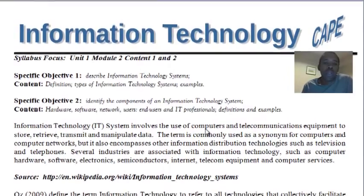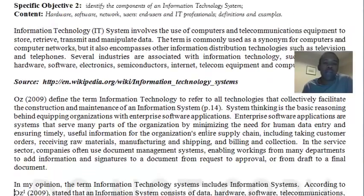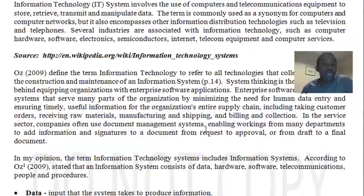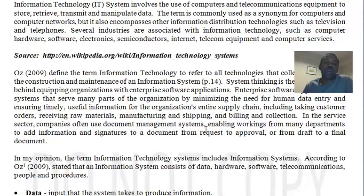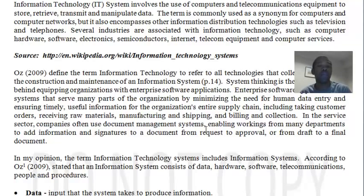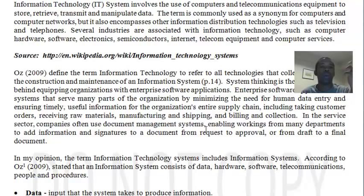Now, in the book Management Information Systems by Oz, Oz gives a very good definition of information technology, from which the term information technology systems is sometimes used synonymously. It refers to all technologies that collectively facilitate the construction and maintenance of an information system. When we speak about assisting, we think about equipping organizations with software and hardware technologies to carry out information processing.